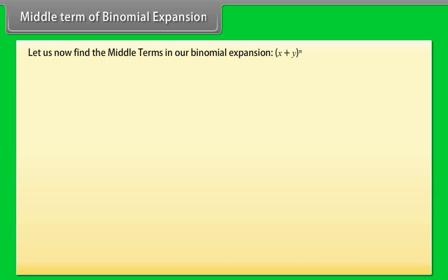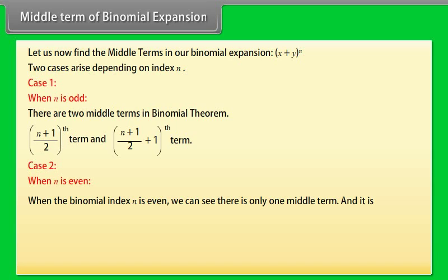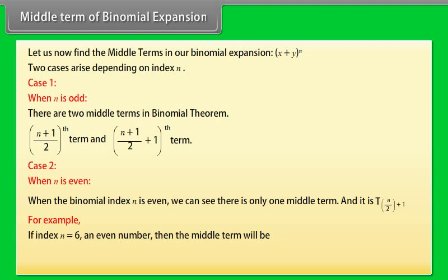Middle term of binomial expansion. Let us now find the middle terms in the binomial expansion of (x + y)^n. Two cases arise depending on index n. Case 1: When n is odd, there are two middle terms — the ((n+1)/2)th term and the ((n+1)/2 + 1)th term. Case 2: When n is even, there is only one middle term, which is T(n/2 + 1). For example, if n = 6, the middle term is T(6/2 + 1) = T4.